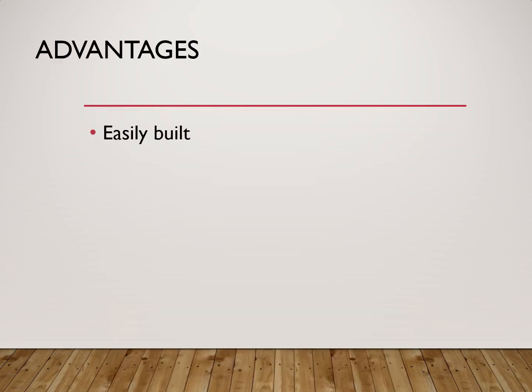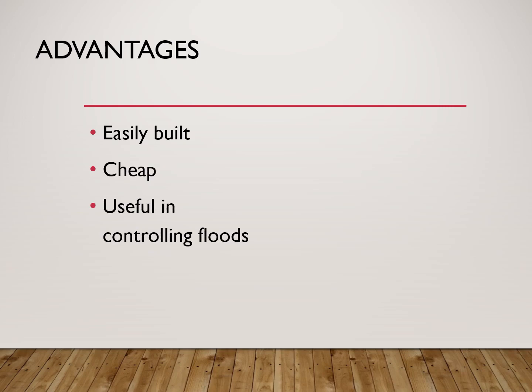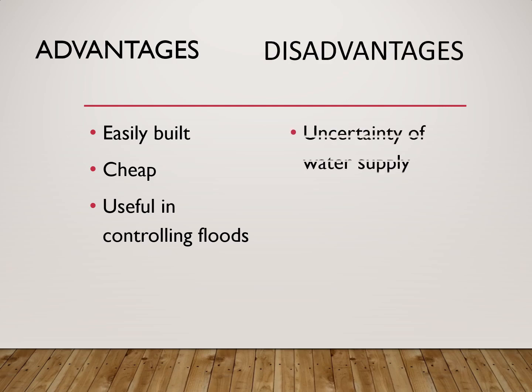Advantages of canal irrigation: they are very easily built — you just cut a part of the embankment of a river and you have a canal ready. They are very cheap to construct and very useful in controlling floods, because if rivers are in flood and there are lots of canals which emerge from the river, the flooding can be controlled to a great extent.